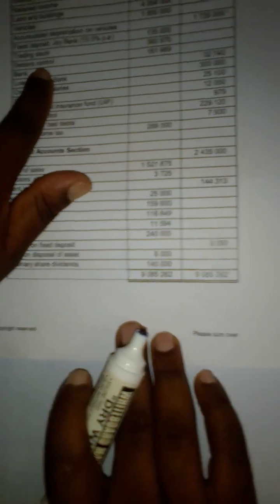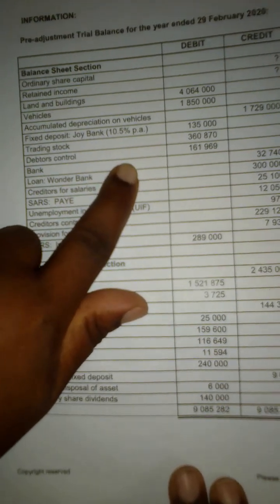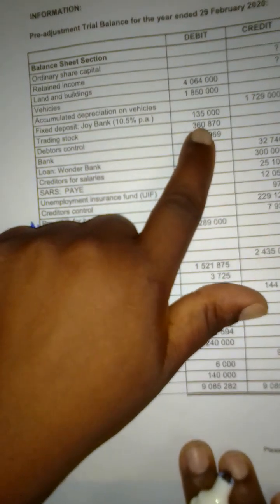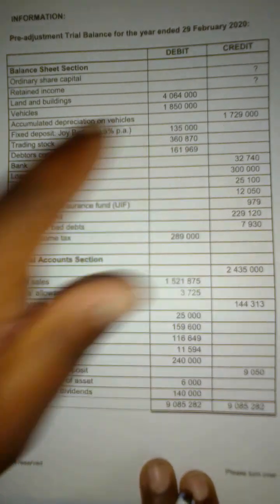So we'll go back to the pre-adjustment trial balance. There is a fixed deposit that is written Joy Bank 10.5% per annum. And the fixed deposit by the end of the year was $135,000 because of the increase. So we make a timeline so that we get to understand exactly what happened with the fixed deposit. How much was it before the increase? Okay, adjustment number F, interest on fixed deposit.